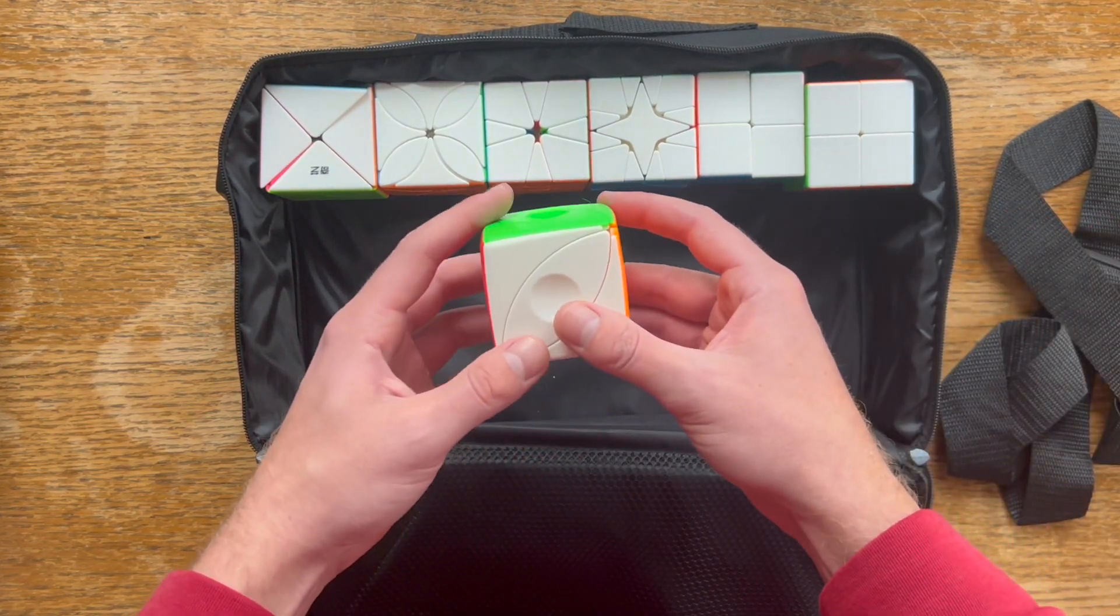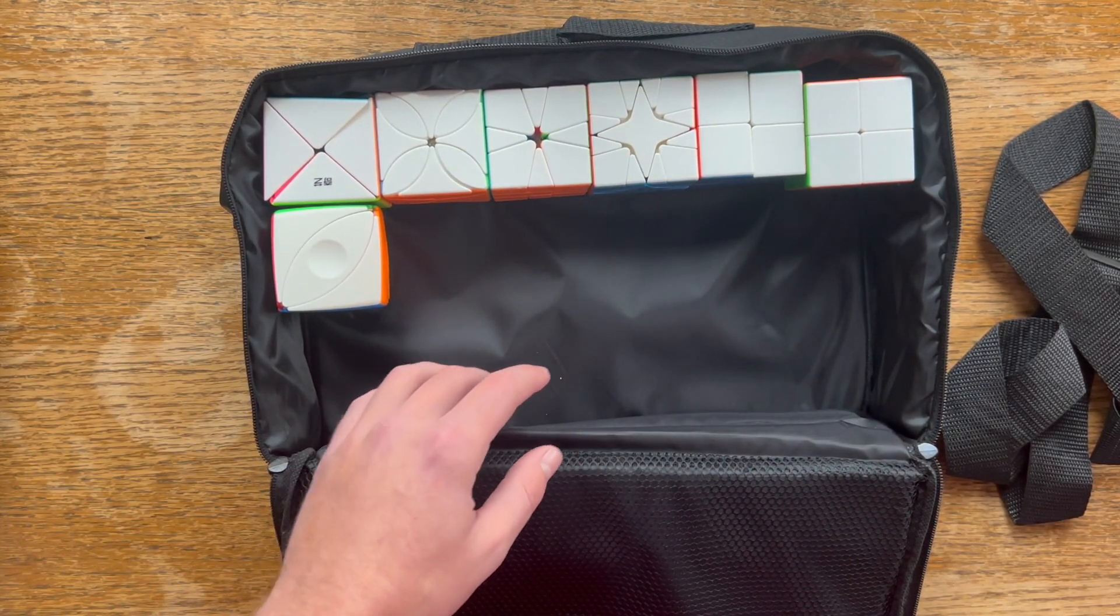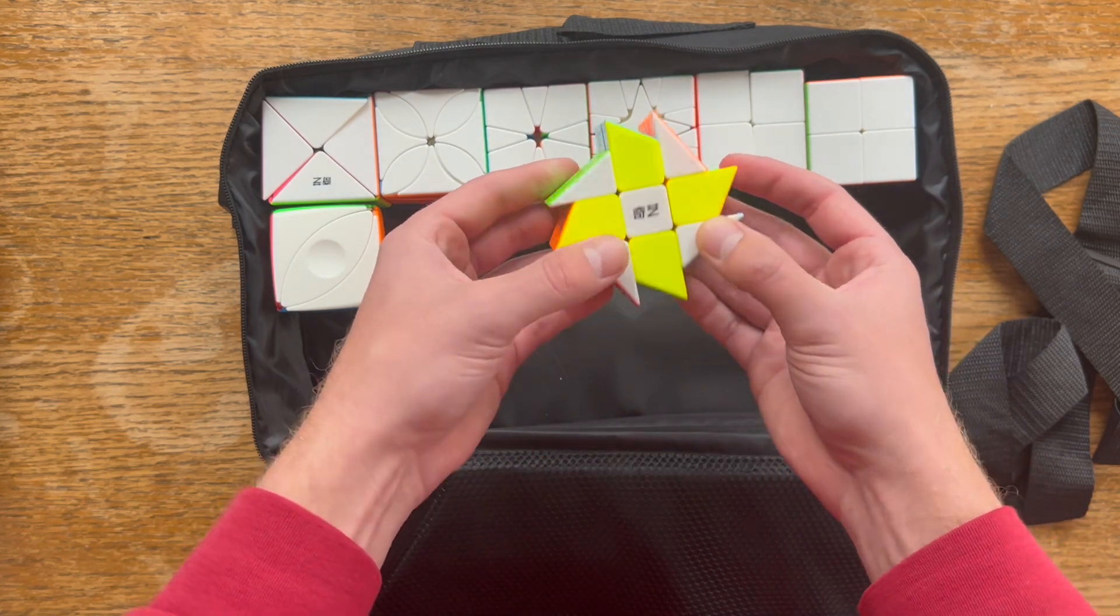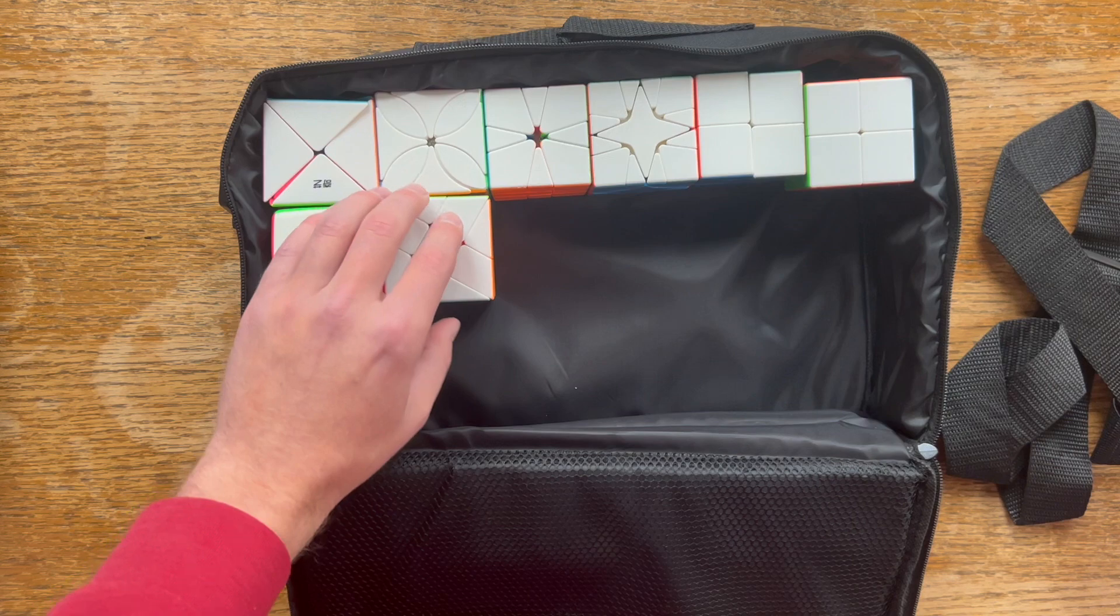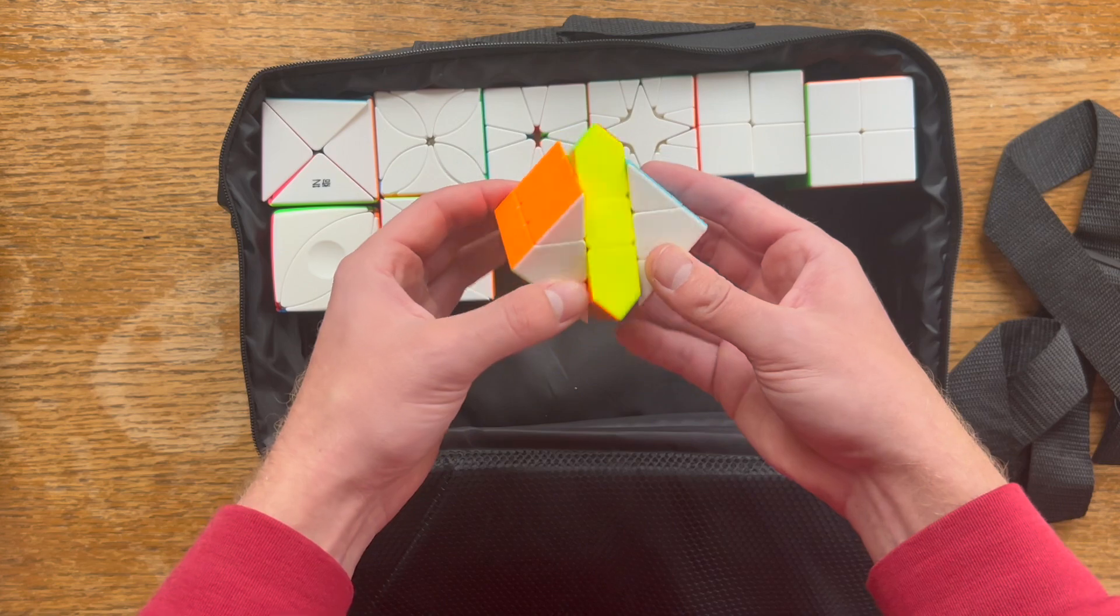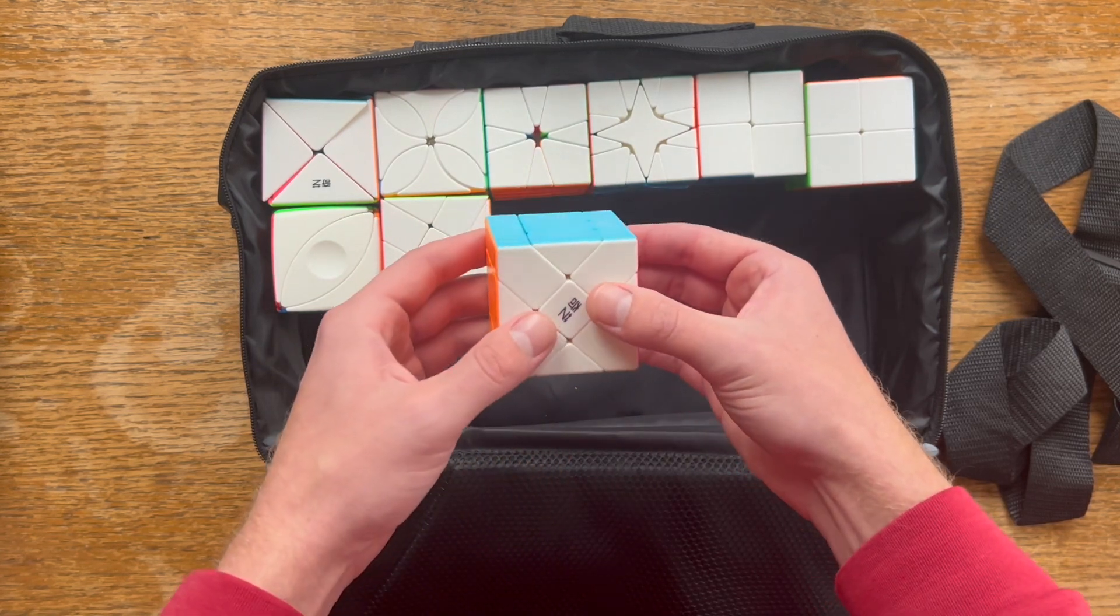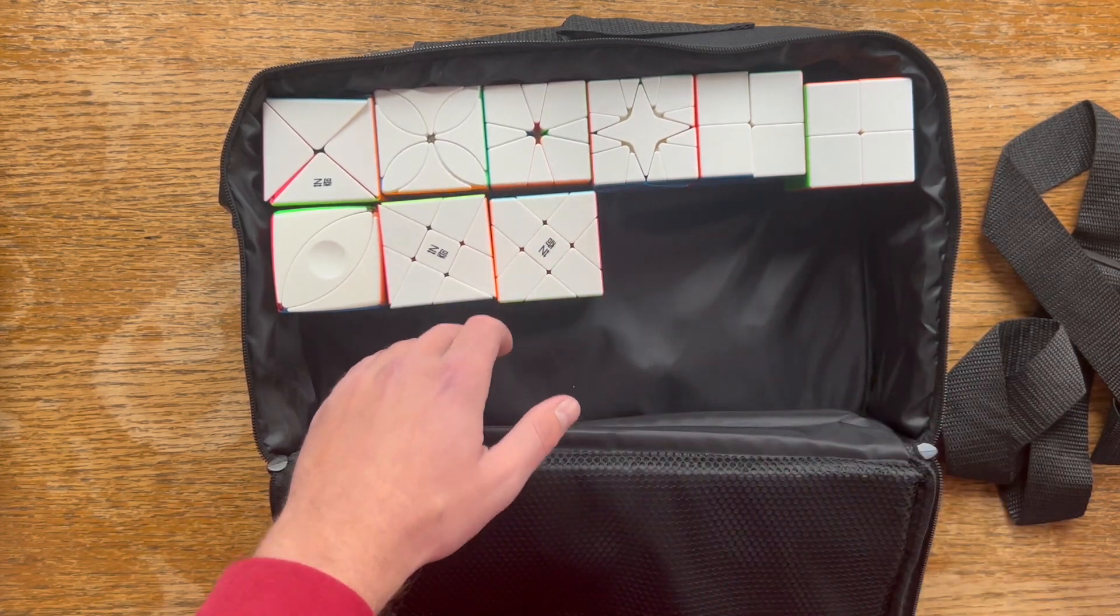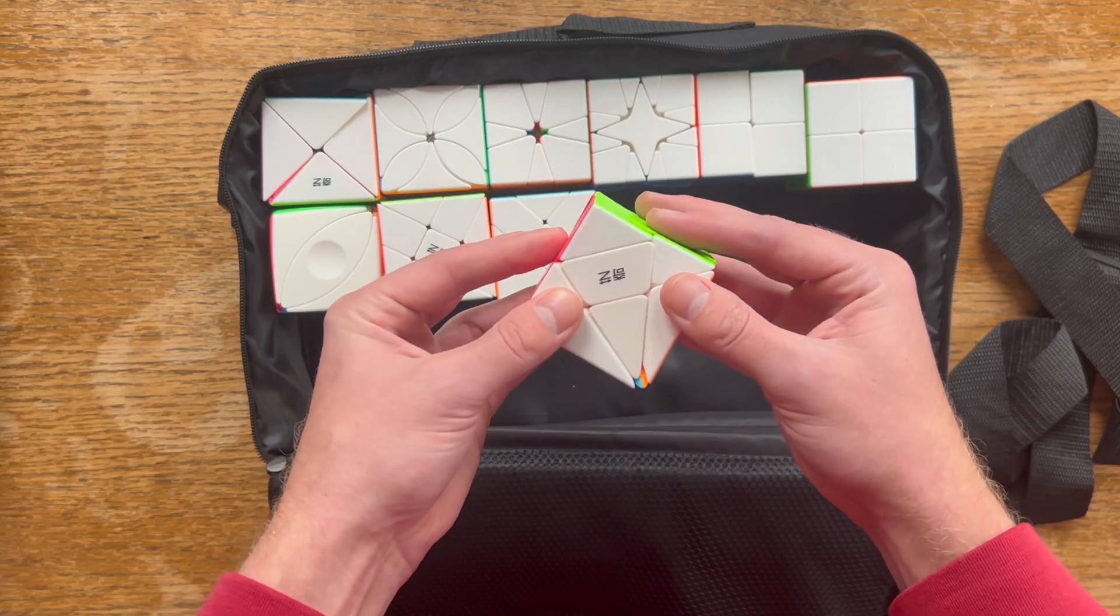Next is the ivy cube, good cube, solved once. Next we got the windmill cube. You can tell because when it's in a checkerboard pattern it looks like a windmill. Next is its brother, the fisher cube, which is very similar. I've only solved this once by accident, and then the other times I solved it and didn't want to do corner orientation, so I just popped the corner off and put it back the right way.